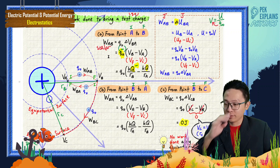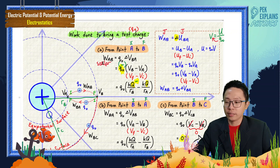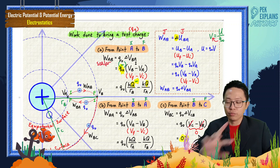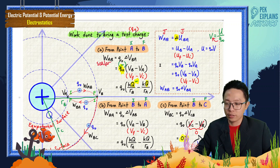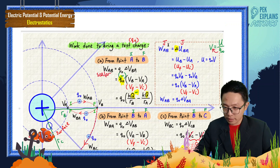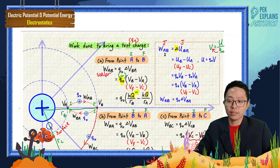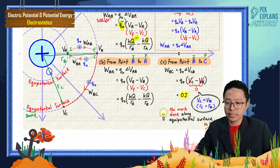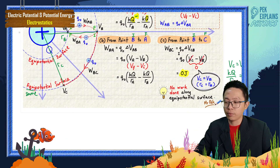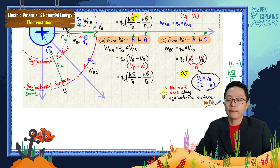To summarize: work done from A to B is W_ab = q₀ · delta V_ba. You must invert the subscripts because of final minus initial. Fundamentally, work done equals delta U — the change in electric potential energy. More problems and videos will be uploaded later.